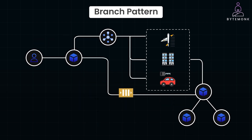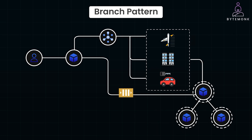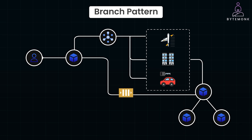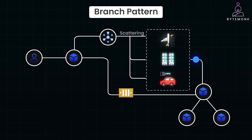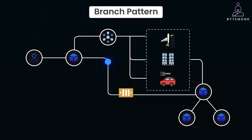The branch pattern is another method similar to scatter-gather, but it allows for different processing paths based on the responses received. It can handle conditional logic and complex workflows. For example, a travel booking system where the aggregator simultaneously checks flights, hotels, and rental cars. If a preferred flight is unavailable, it can trigger an alternative search or notify the user to adjust their preferences.